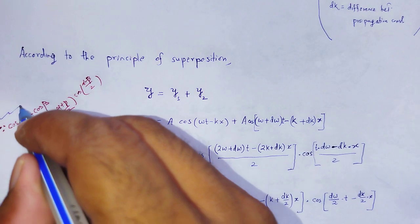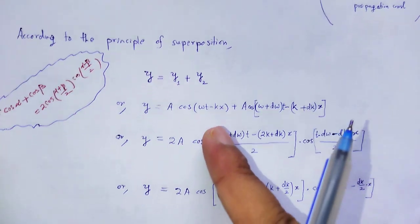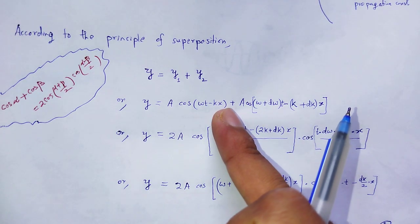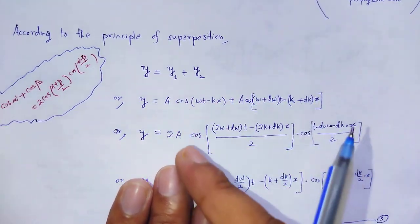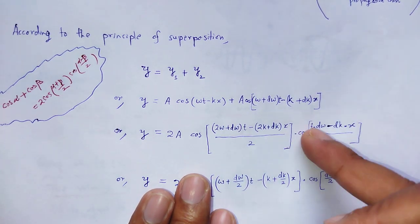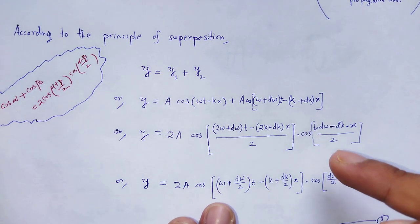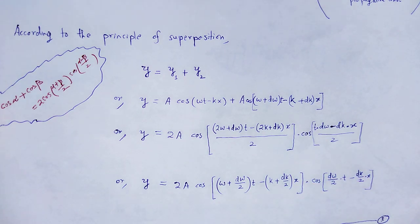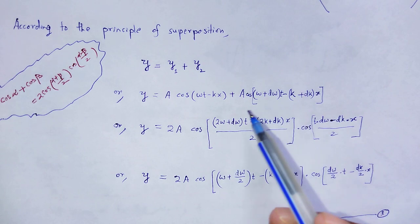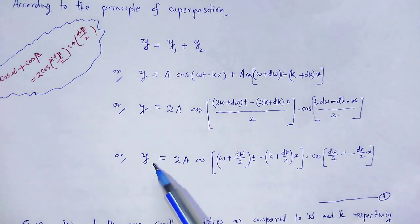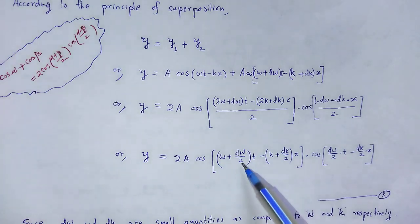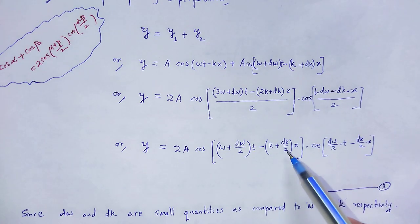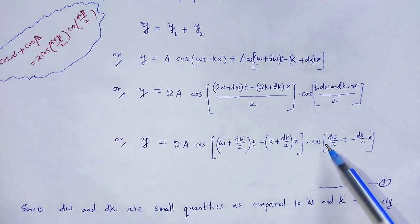That identity is used here. Taking 2a as common: y = 2a cos((α + β)/2) · cos((α − β)/2). We rearrange the terms. Therefore, y = 2a cos((ω + dω/2)t − (k + dk/2)x) · cos(dω/2 · t − dk/2 · x).